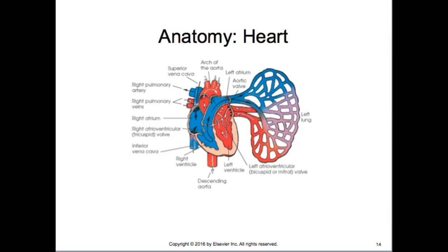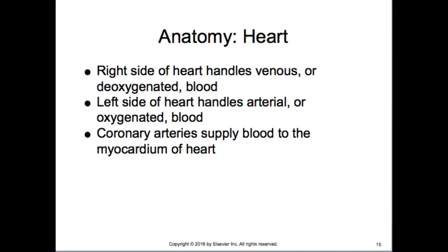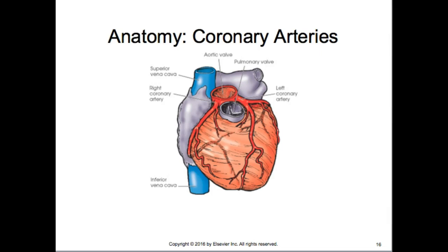You should be able to trace a red blood cell from the inferior or superior vena cava into the right atrium all the way through to the descending aorta. The right side of the heart handles venous or deoxygenated blood; the left side handles oxygenated blood. The coronary arteries supply blood and nutrients to the myocardium. The left coronary artery is the big one — called the 'widow maker.' A blockage there and the likelihood of survival is grim.